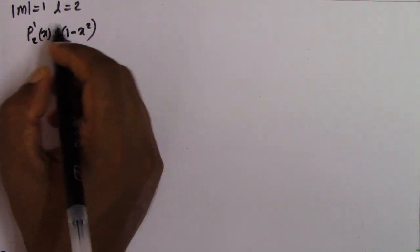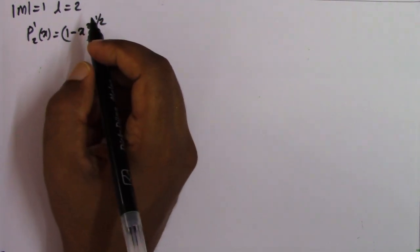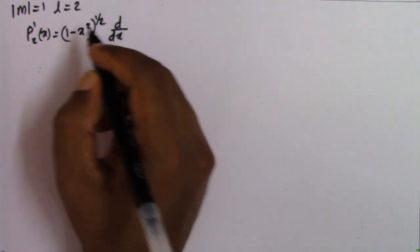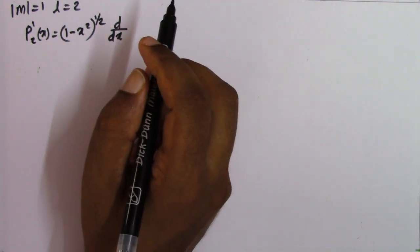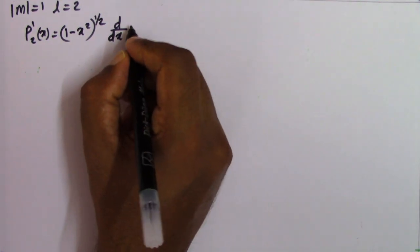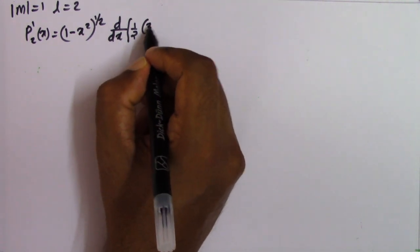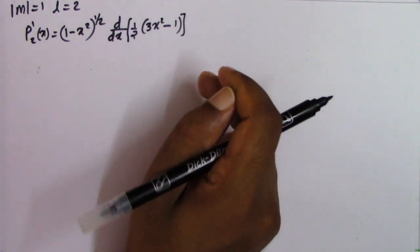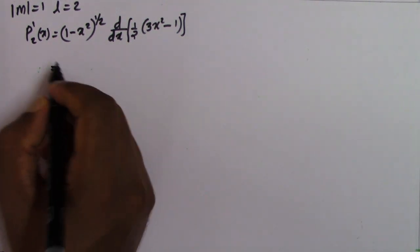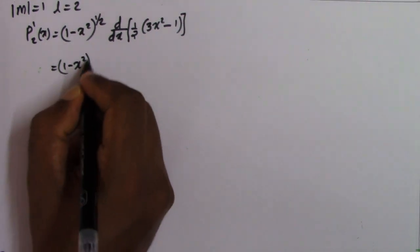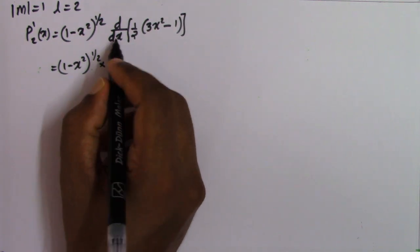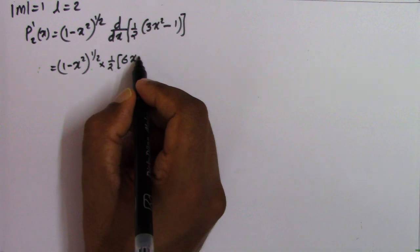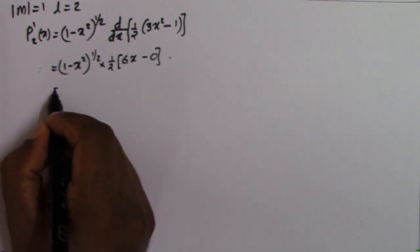In our case m/2 is 1/2, and d^m/dx^m of P_l(x), which is P_2(x). P_2(x) is nothing but half of (3x² - 1). So that is equal to (1 - x²) raised to 1/2, into half of d/dx of (3x² - 1), which gives 6x. That equals (1 - x²) raised to 1/2 into 3x.